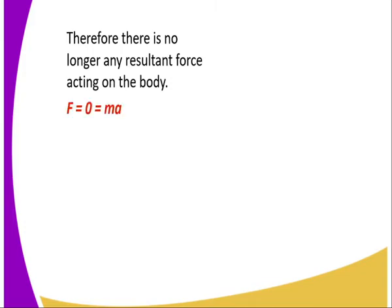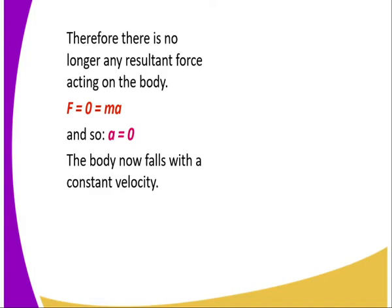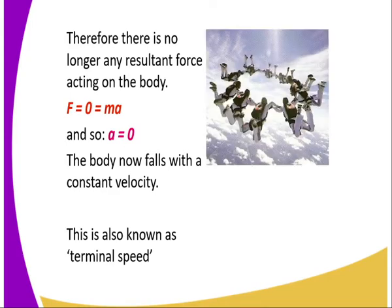There is no longer any resultant force acting on the body since action is equivalent to reaction, and therefore the change in momentum is zero. From the equation F = ma, the body now falls with a constant velocity. The constant velocity with which this body falls is what we refer to as terminal speed or terminal velocity. We refer to it as velocity since the force is in a specified direction. As you can see on the left-hand side...